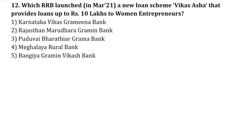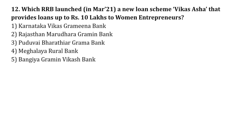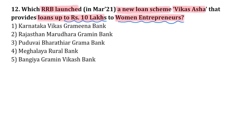Which RRB launched a new loan scheme called Vikas Asha, providing loans up to 10 lakh rupees to women entrepreneurs? It was launched by Karnataka Vikas Grameen Bank.